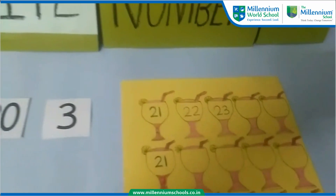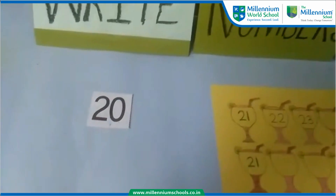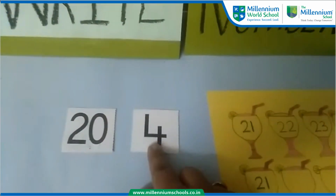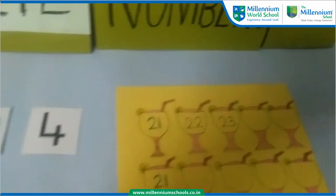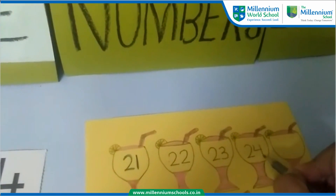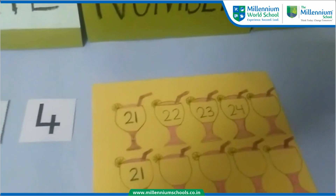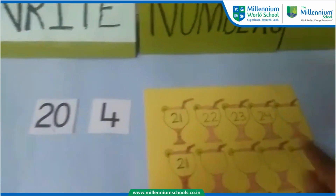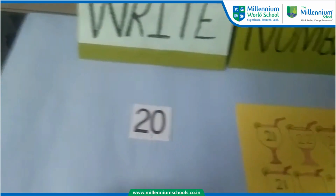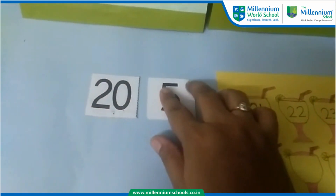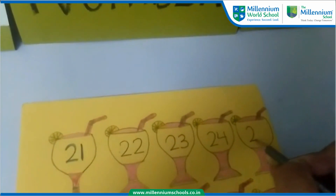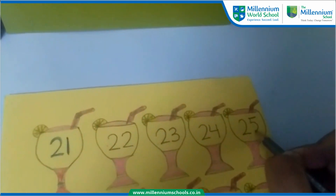Very good. Children, please look at this. 20 and 4 makes 24. Very nice. Now the last one is 20 and 5 makes 25. Excellent.